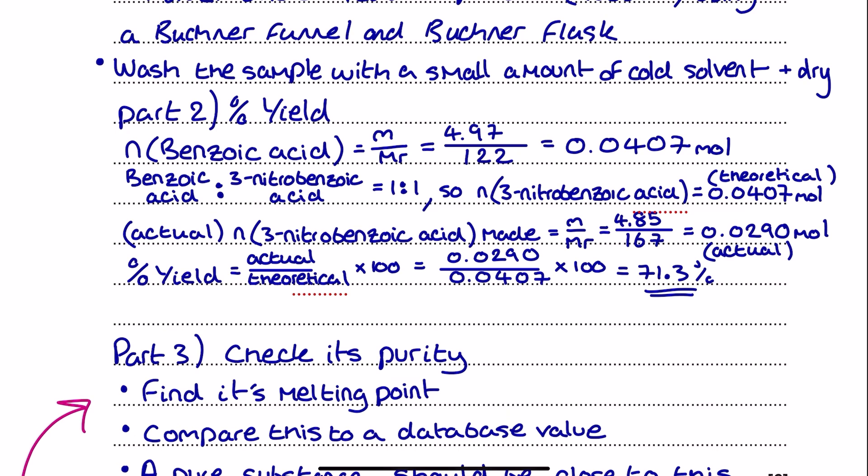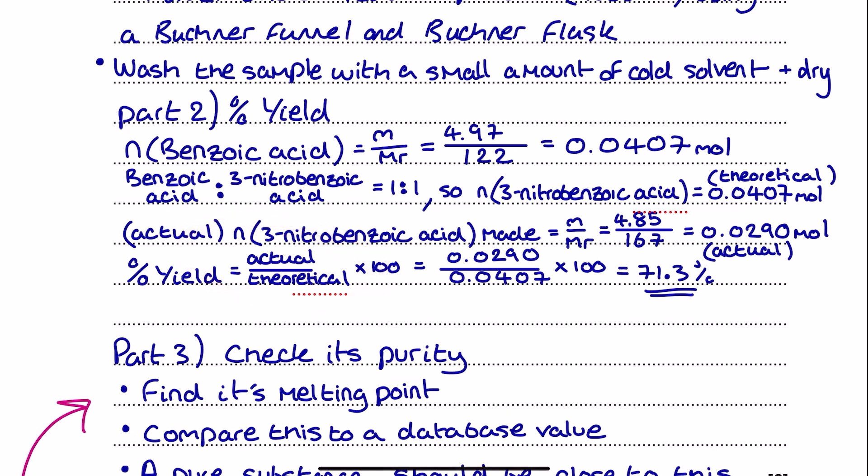Then the percentage yield calculation is actual moles divided by theoretical moles, multiplied by 100, which gives a percentage yield of 71.3%.